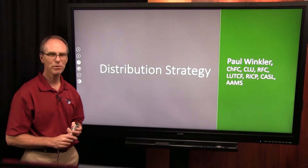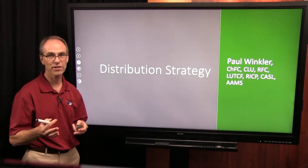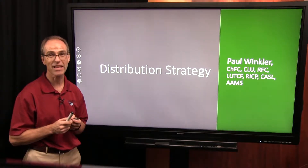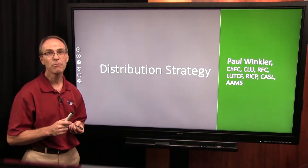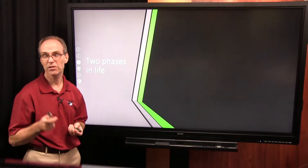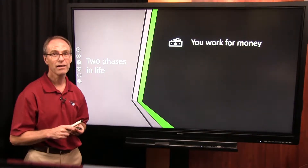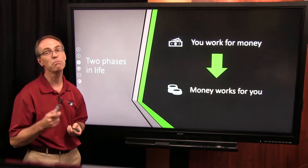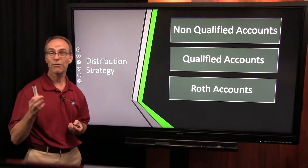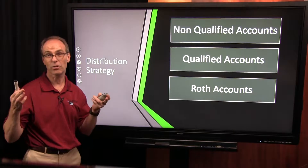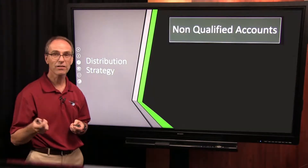Let's talk about distribution strategy. You might have a distribution strategy for taking money out of various asset classes out of your investment portfolio, but how about the types of accounts and the two phases in life? Number one, you work for money, and then hopefully, if you've done it right, money works for you later on. You might have non-qualified accounts, things called qualified accounts, Roth accounts — let's take a look at each one of those.